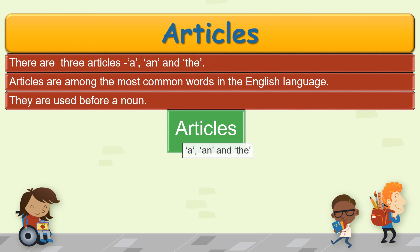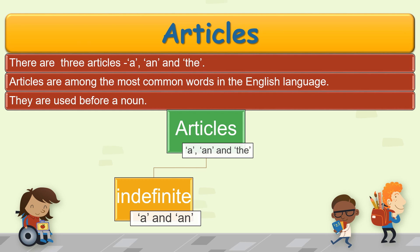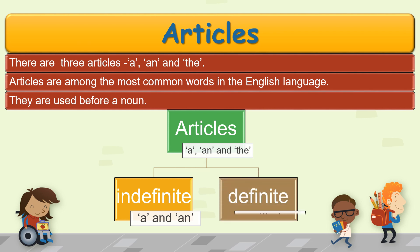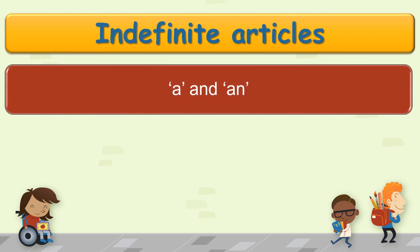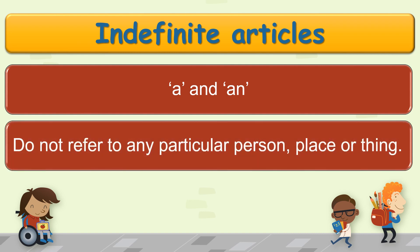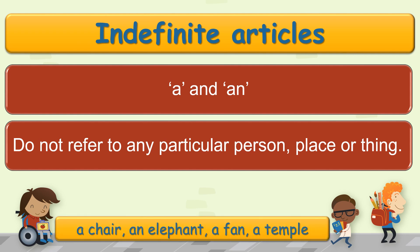Articles are of two types. Indefinite articles, which are 'a' and 'an'. And definite articles, which is 'the'. A and an are called indefinite articles because they do not refer to any particular person, place, or thing. Like: a chair, an elephant, a fan, a temple.